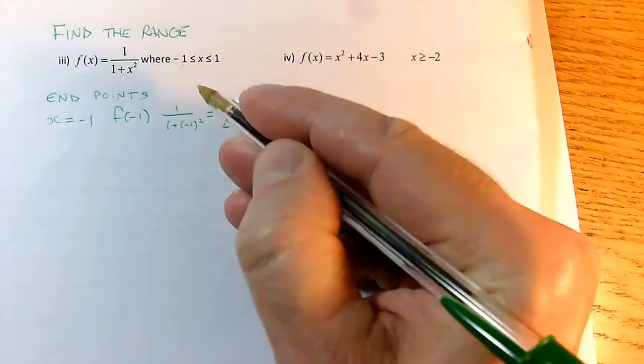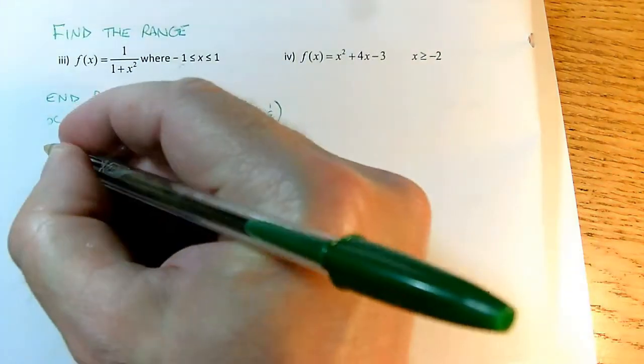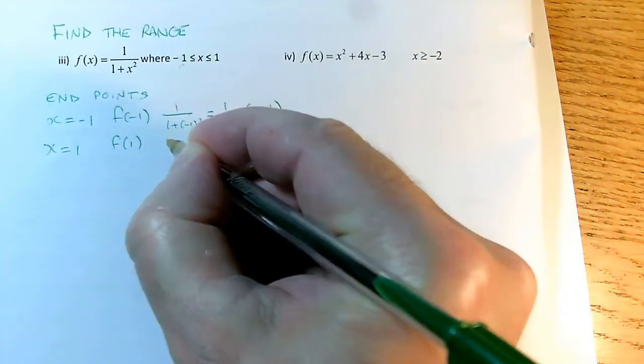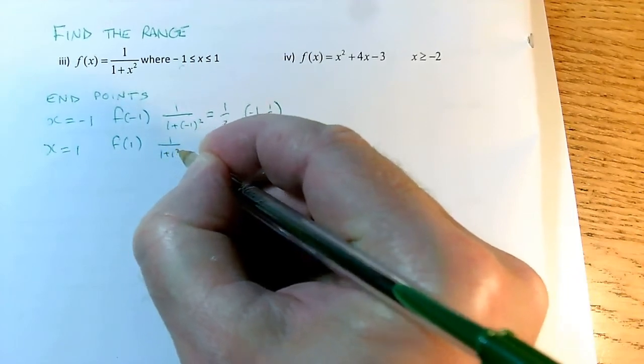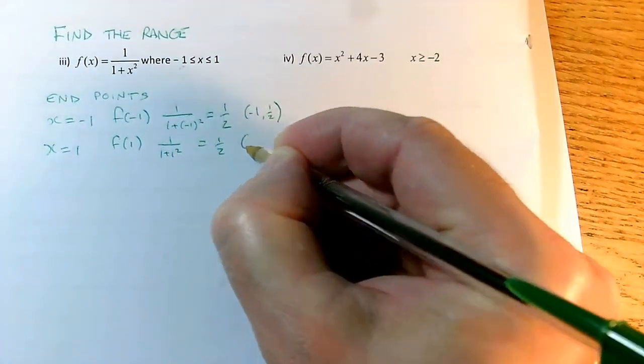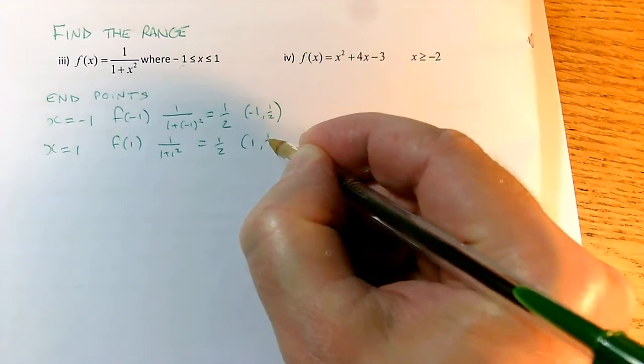And my other endpoint is when x is 1, so x equals 1, f of 1 is 1 over 1 plus 1 squared, which is also a half. So my other endpoint is 1, a half.